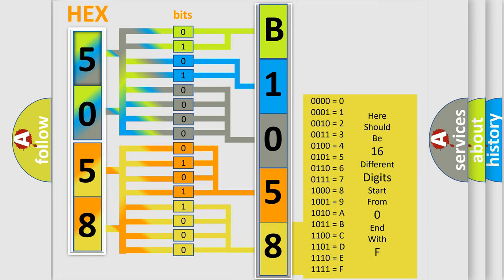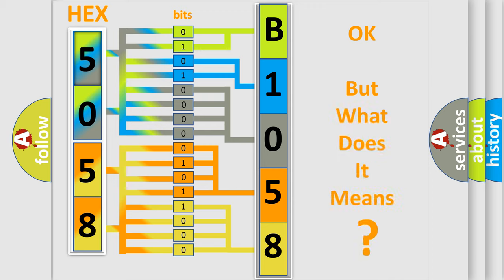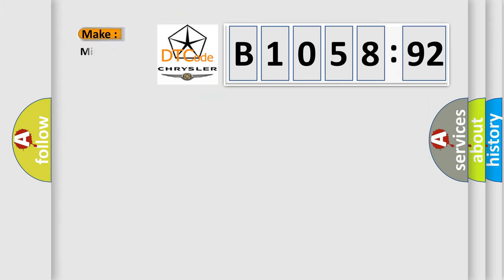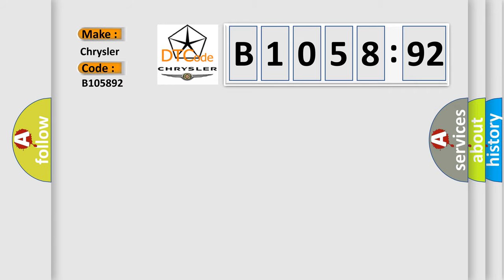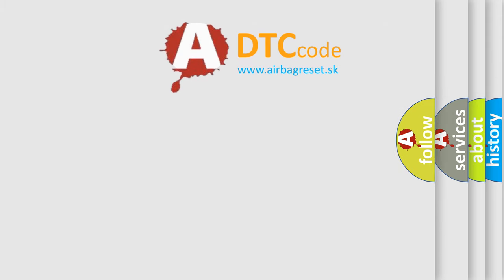What does the diagnostic trouble code B105892 interpret specifically for Chrysler car manufacturers? The basic definition is IAT sensor high voltage, low air temperature. The sensor to ECM circuit can have an open circuit or high resistance, a short to high voltage, a loose or corroded connector, or sensor failure. This subtype is used for failures where the control module has detected that the component performance is outside its expected range or operating in an incorrect way.